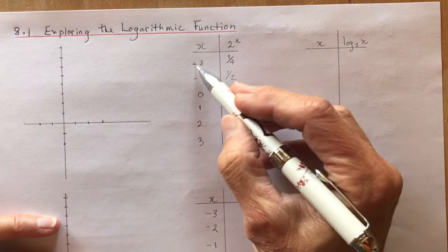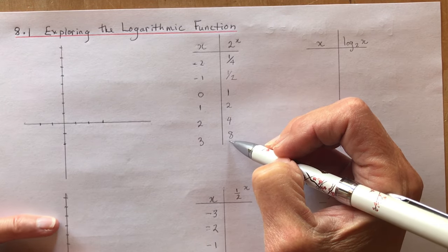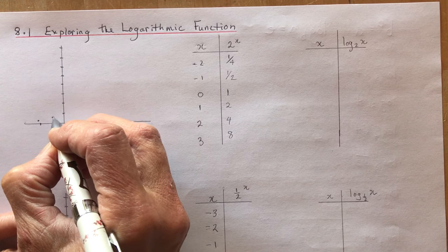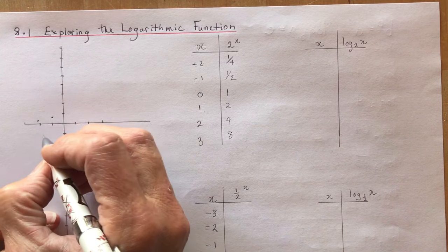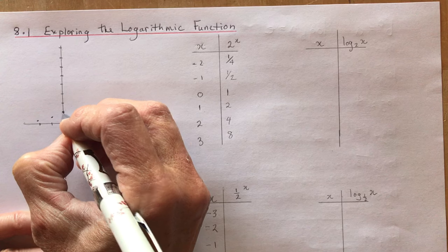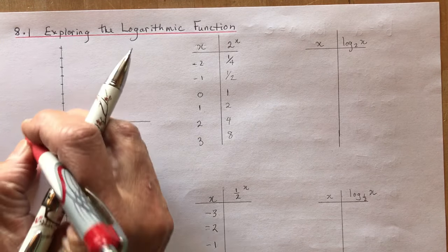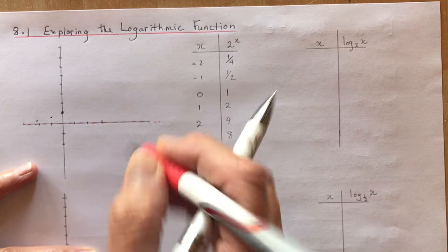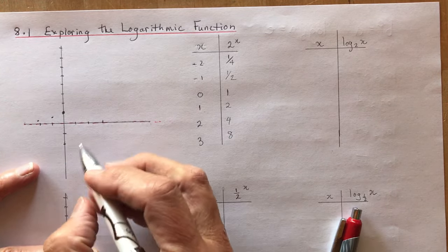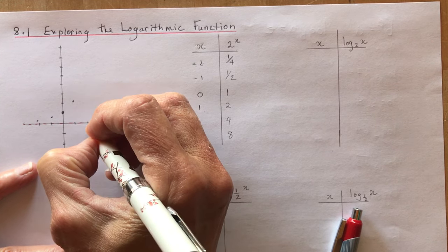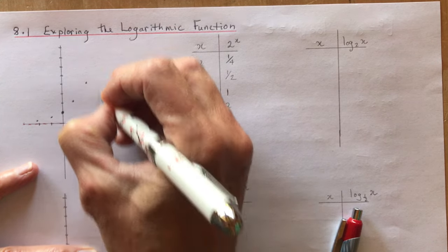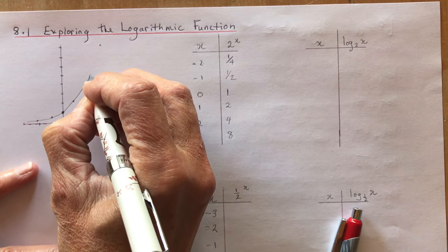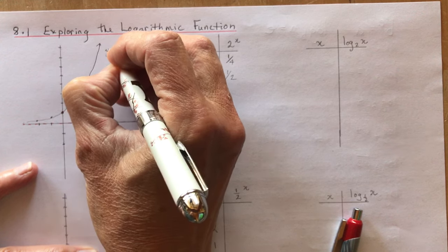These would be the coordinates that I would use to graph the exponential function. The exponential function has a horizontal asymptote, and that horizontal asymptote happens to be the line y equals 0. Let's sketch this quickly. Here's my exponential function. This would be the function y equals 2 to the x.